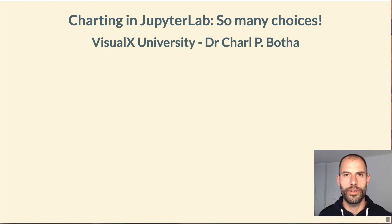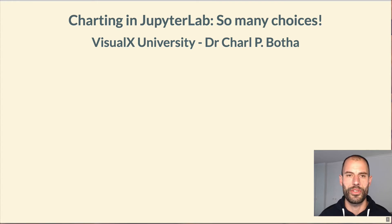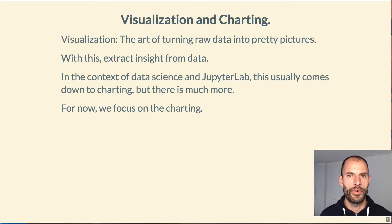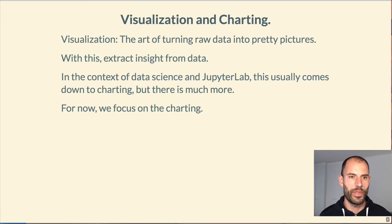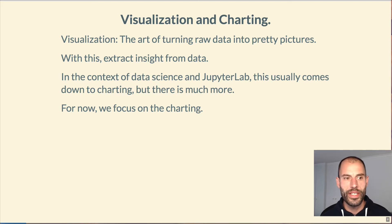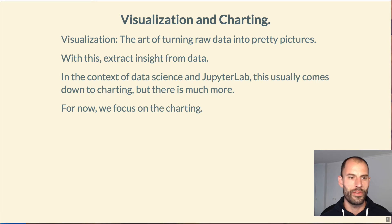Good afternoon. Today I'd like to talk briefly about all of the many choices we have when it comes to charting in JupyterLab. First, for a bit of context, what is visualization? Visualization is the art of turning raw data into pretty pictures. By doing this, we try to use the human visual system to extract insight or knowledge from data. In the context of data science and the whole Jupyter ecosystem, this usually comes down to charting, but there is much more in the wonderful world of visualization, and hopefully we'll get back to more of that in future lectures.